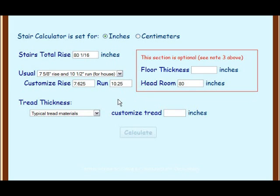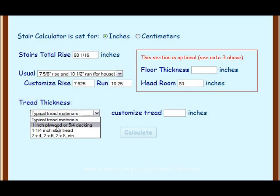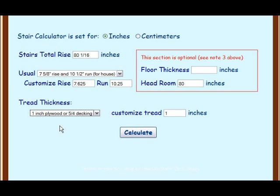Do this also with the thickness of the tread you want to use on the staircase. Usually one inch plywood is used for stairs inside the house and two by four or two by six on outside steps. Again, you can enter in a specific tread thickness if you've got some odd sized lumber around you'd like to use.